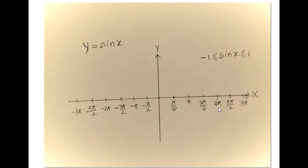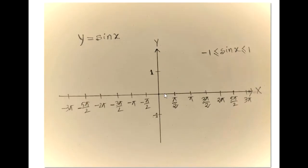Before doing the graph, we know that minus 1 is less than or equal to sin x, which is less than or equal to 1. The range of sin x is between minus 1 and 1. So I indicate the two points on the y axis: 1 and minus 1.